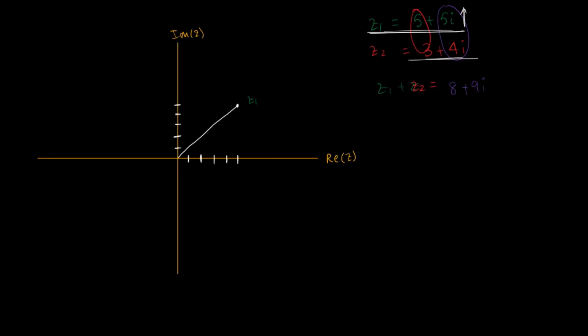If you went on to draw Z2, it is 3 plus 4i. So three on the real axis and four on the imaginary axis — somewhere it will look like this. This is Z2.